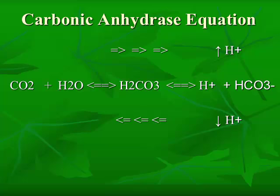For example, if you have CO2 retention, you're going to have an increase in hydrogen. If you have a blowing off of CO2, then you're going to have a decrease in hydrogen. This formula works back and forth to help maintain the acid-base balance.